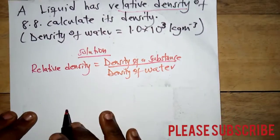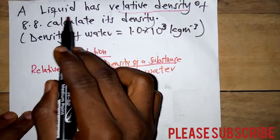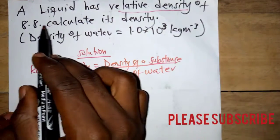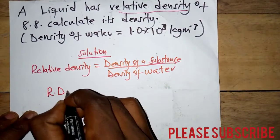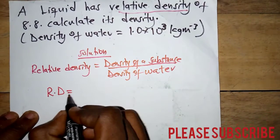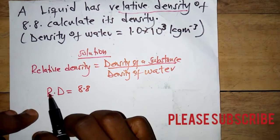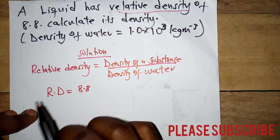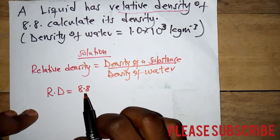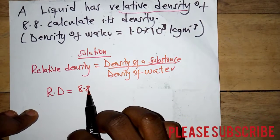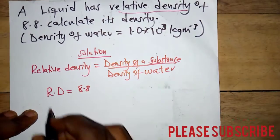In this question, a liquid has a relative density of 8.8, so RD equals 8.8. One important thing to note is that relative density has no unit — it is just 8.8.